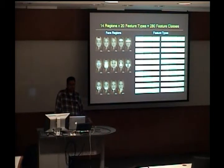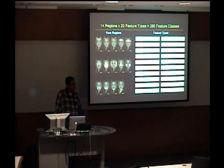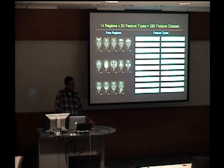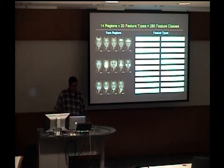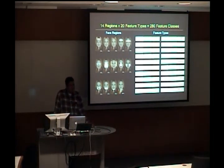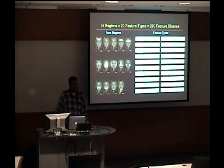For the features, we have a collection of different types of information to extract. It might be RGB values, HSV values, edge magnitudes or orientations. You can normalize these things in different ways and aggregate them — concatenate them, construct a histogram, or take the mean and variance. We have around 20 different feature types, and combining these together there are 280 different feature classes that we can extract from each image.